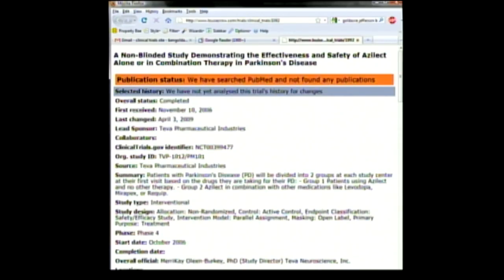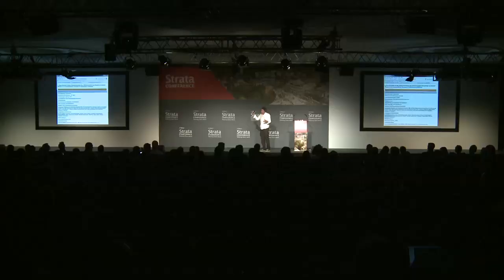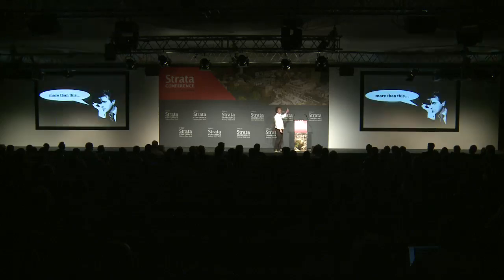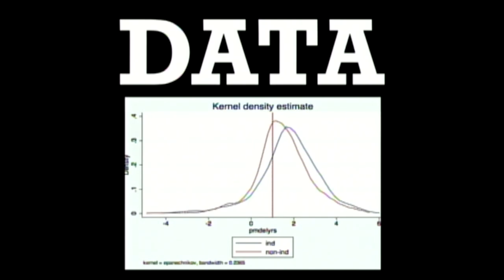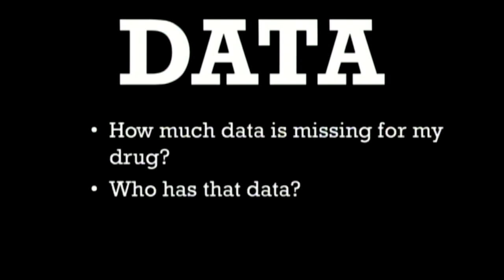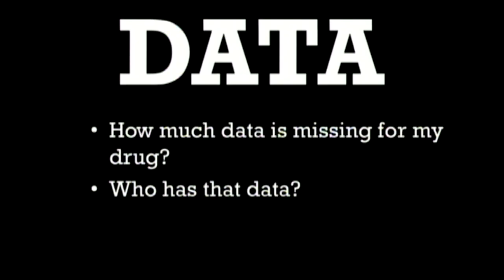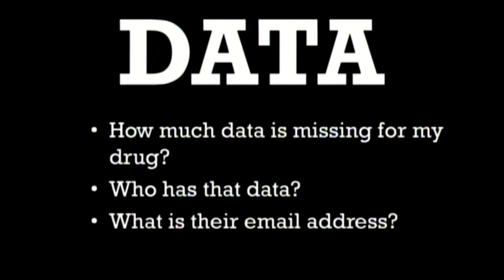We've built a machine that grabs all of the trials registers for any evidence of trials that have been conducted and completed, then tries to match them against trials which have been published. We can show individual studies that are either missing or present. More than that, we can give ranked lists of worst offenders — worst drugs, worst companies, worst researchers, worst research sites. We can give individual doctors and patients information about how much data is missing from their drug, who has it, and the email address of the person withholding that data.